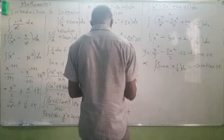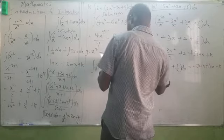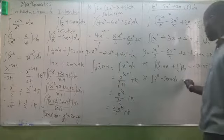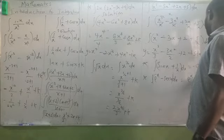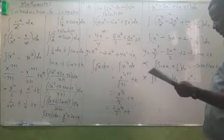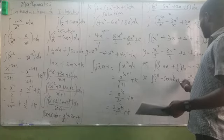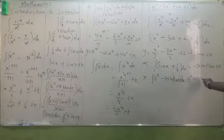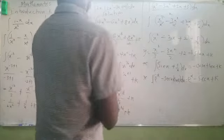Problem: evaluate the integral of (x − sec x) dx. Recall sec x = 1/cos x. Integrating x gives x²/2, and integrating −sec x gives −ln|sec x + tan x|. So the final answer is e^x − sec x + k. Note these standard results carefully.